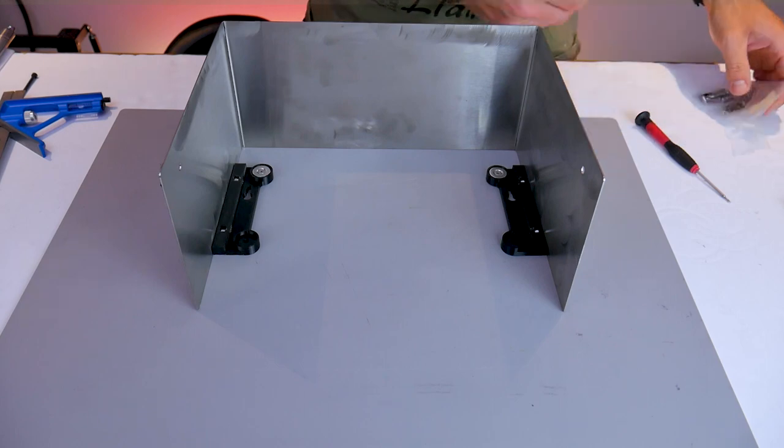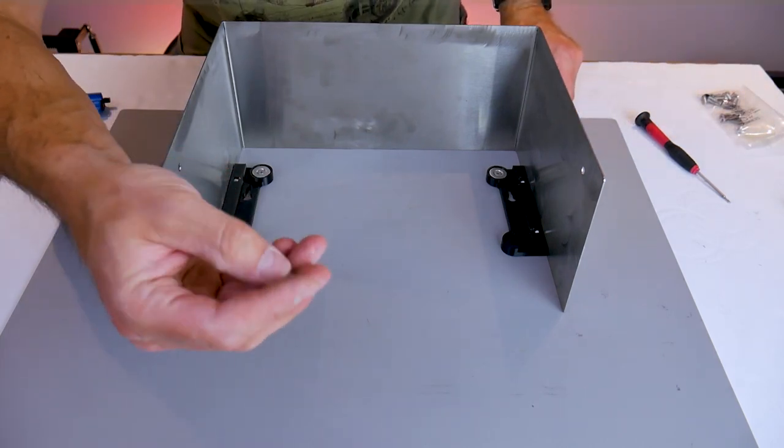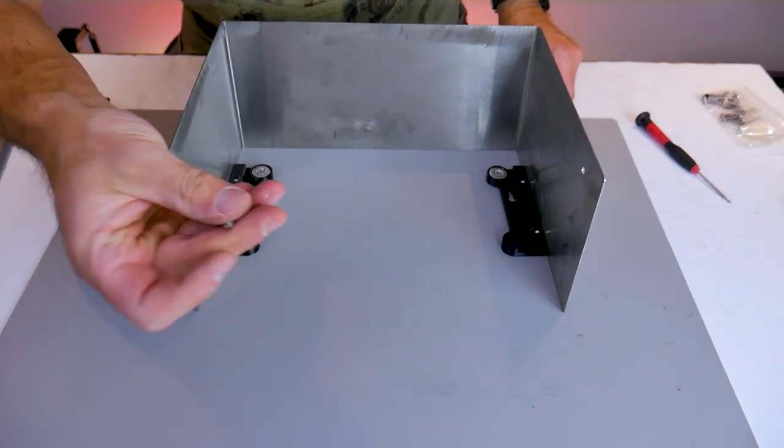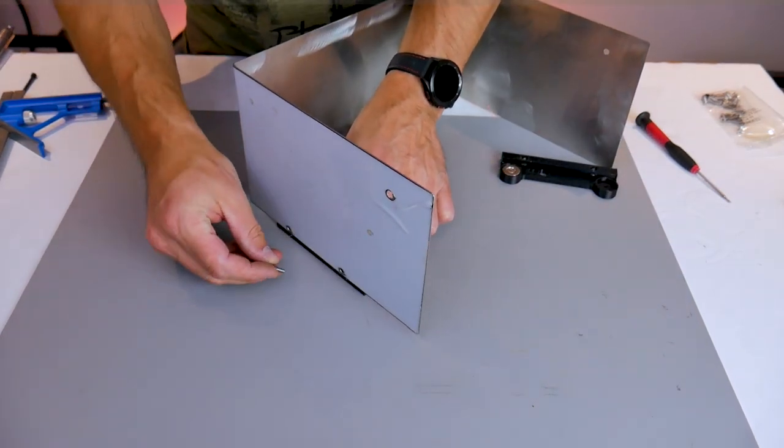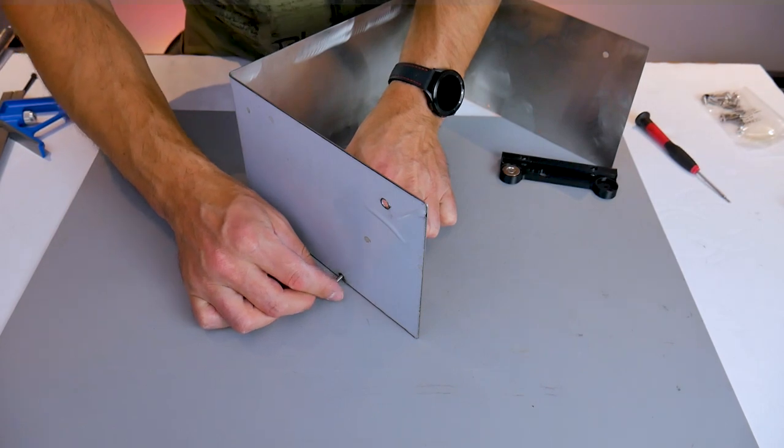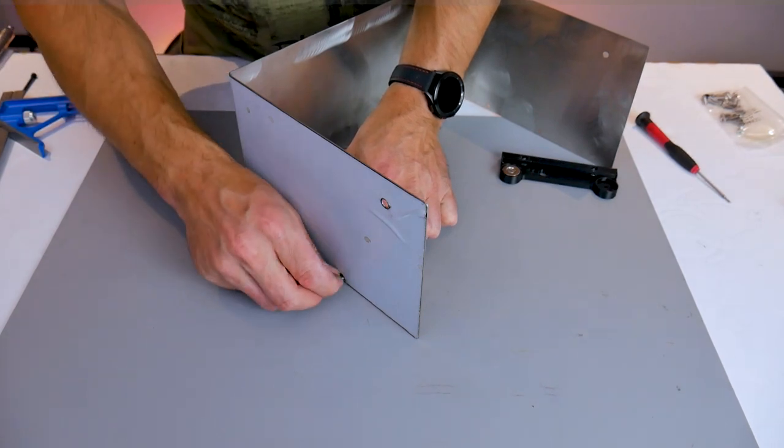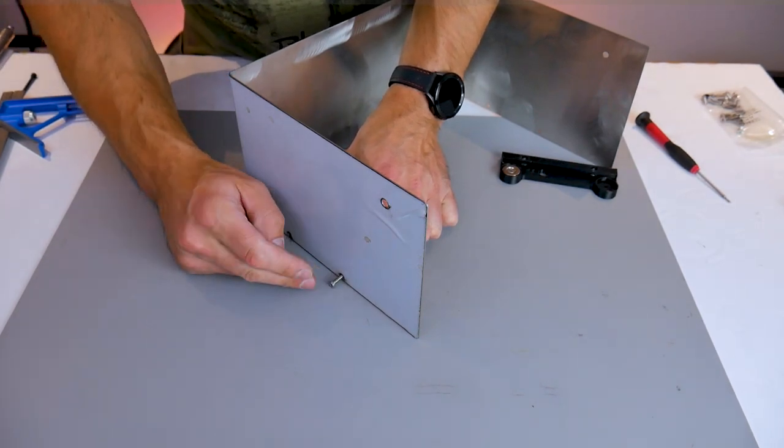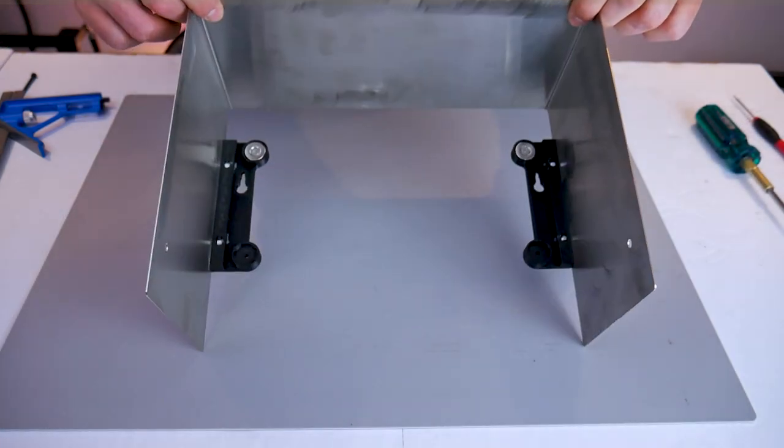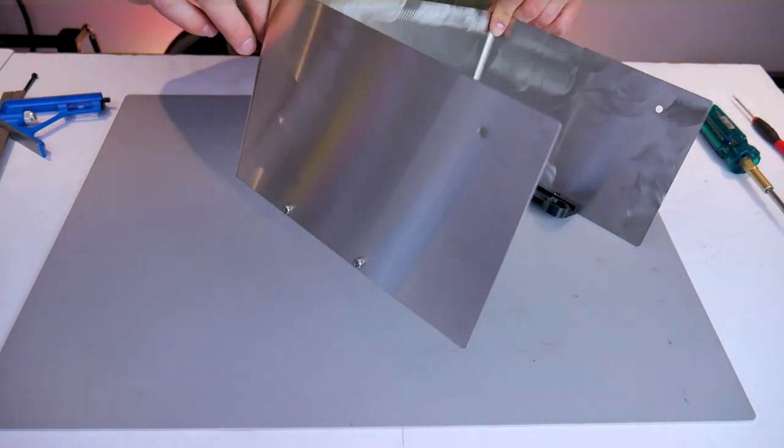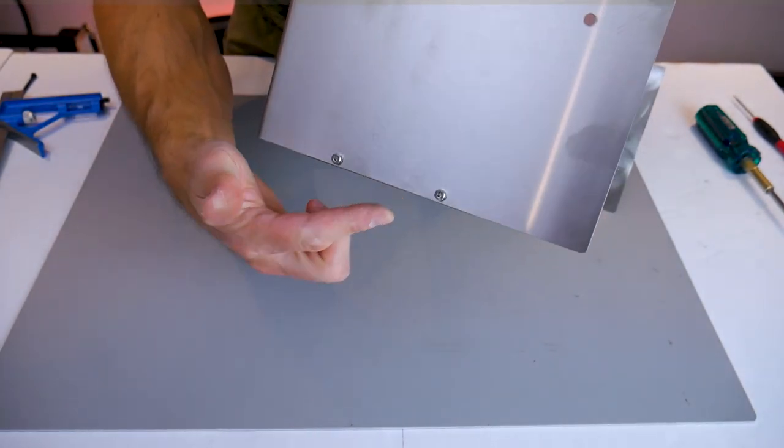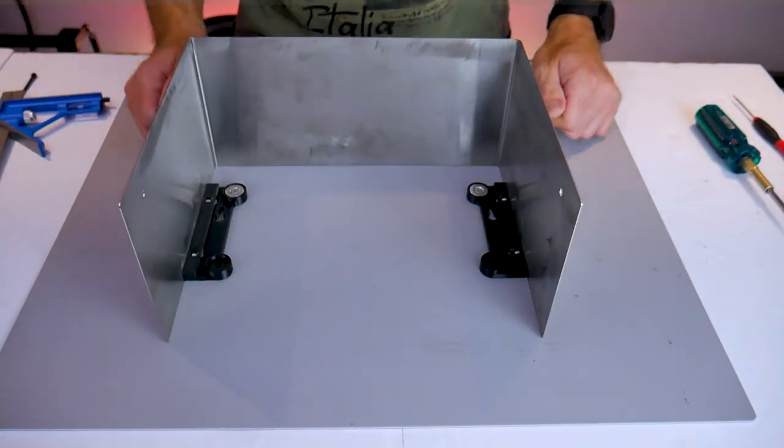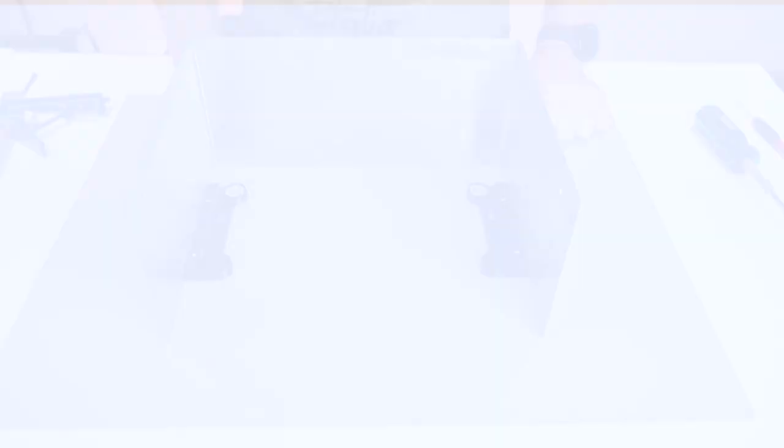So for example I'm attaching these brackets to the outer frame using some M4 by 12 socket head cap screws, but if you don't want to use metric you probably could get away with using 8-32 by half inch and they would fit just fine. Four of those socket head cap screws, two on each side, will attach those brackets to the outer frame. The screws thread into the nylon locking nuts that we inserted into those 3D printed parts and with everything tightened down it should be very secure.